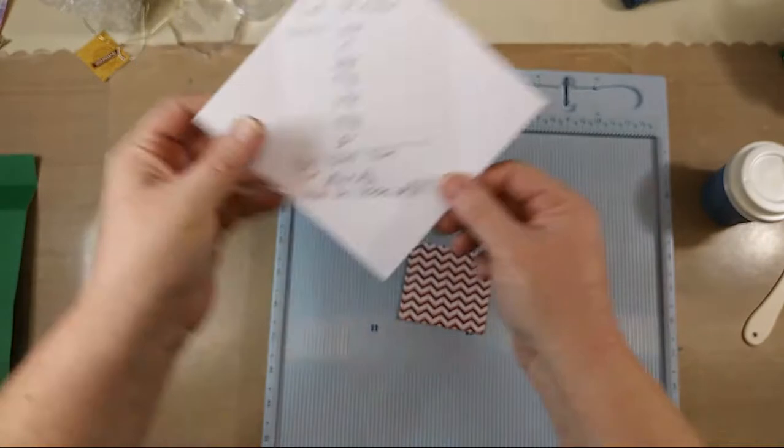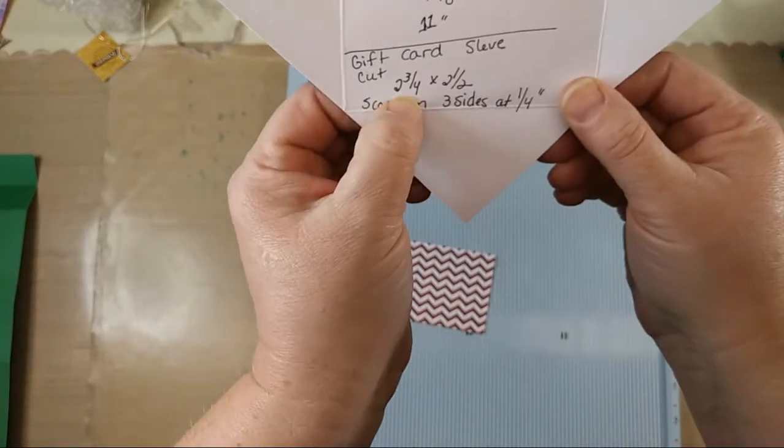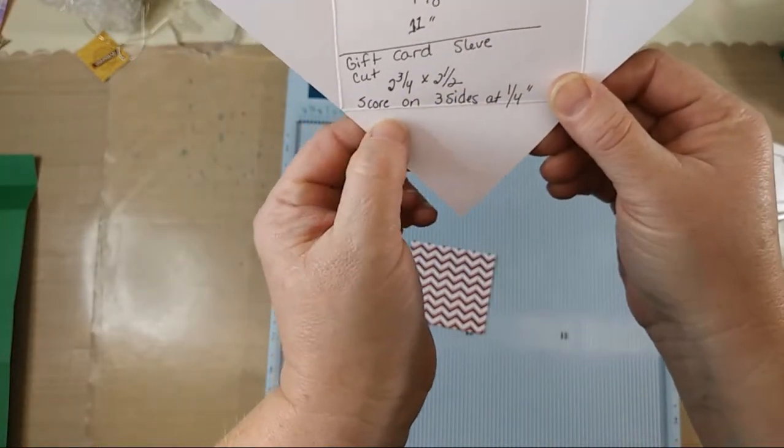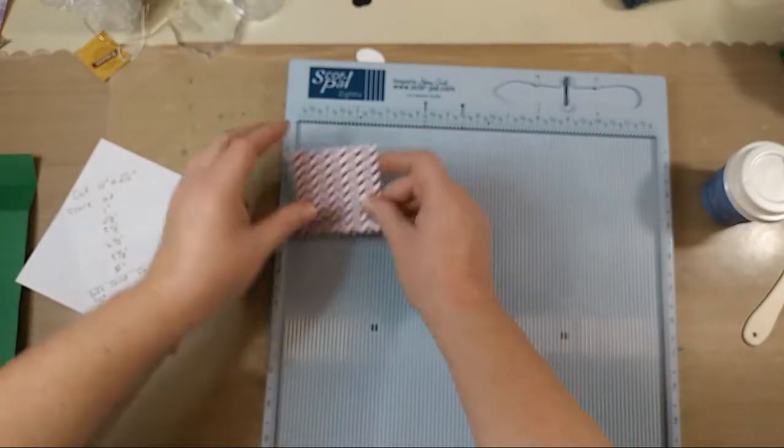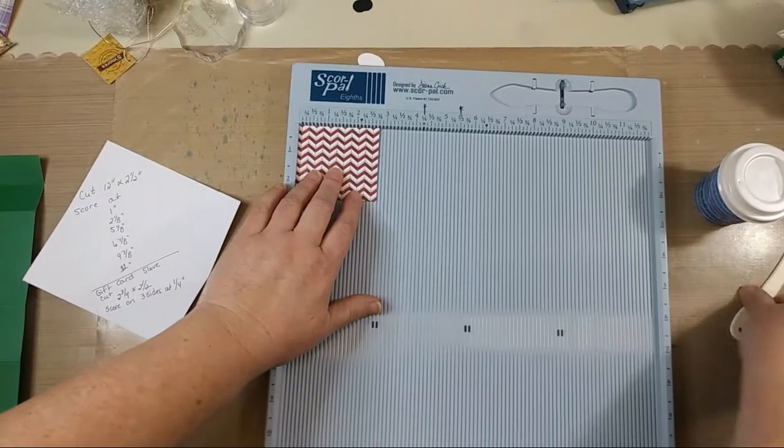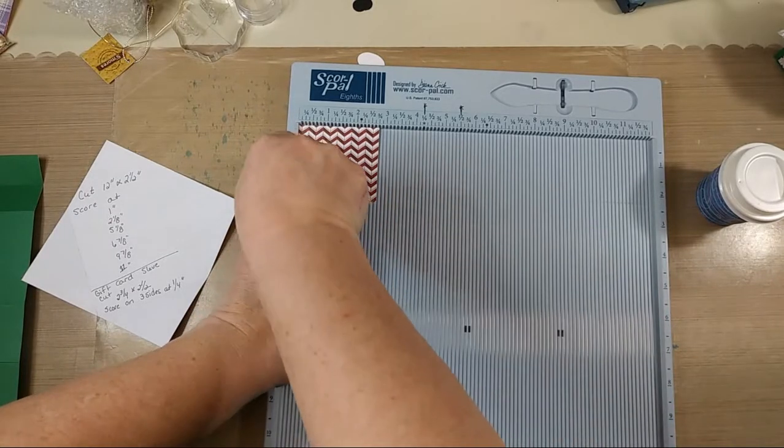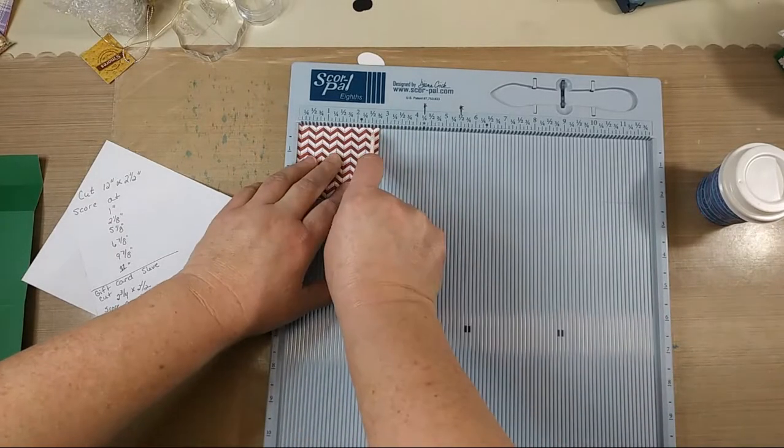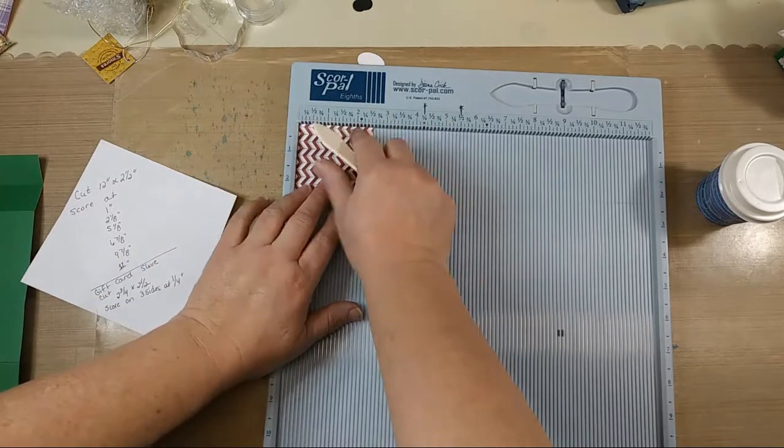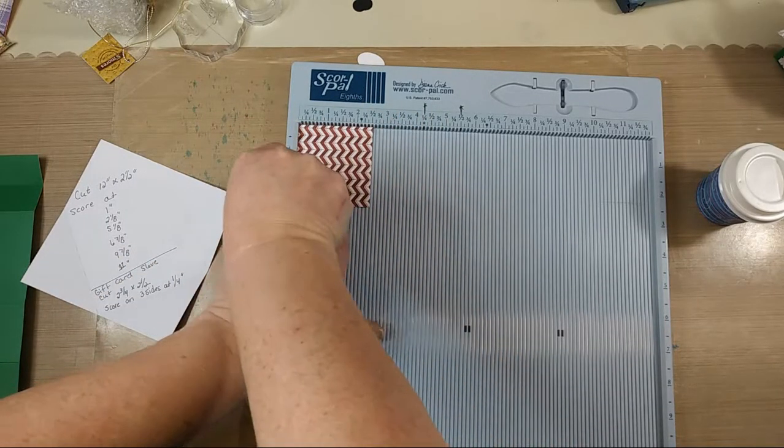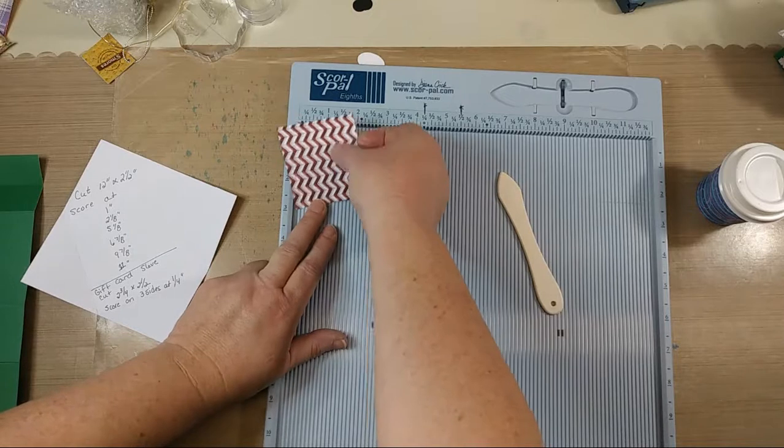Then you have your little strip of paper, and I cut that at 2-3/4 by 2-1/2, and then you score it on three sides at a quarter of an inch because you want little tabs to fold in. Now, if you come up with an easier way to do this for yourself, please feel free, this is just how I did it, and how it made sense to me in my mind. But everybody's different, and so that's fine.